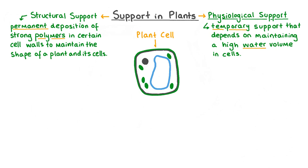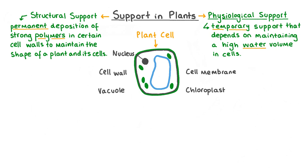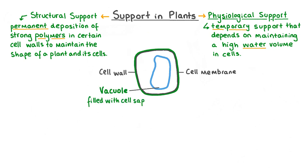This diagram shows a typical plant cell. We can see the nucleus, some chloroplasts, a rigid structural layer called a cell wall surrounding the outside of the cell, and within it a thinner cell membrane. We can also see a large permanent vacuole. The vacuole in a plant cell is usually a large structure filled with a liquid called cell sap. Cell sap contains water molecules and dissolved solutes like sugars and enzymes.